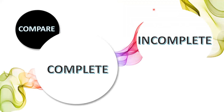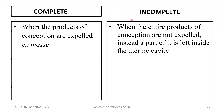Next, let's see complete and incomplete abortion. These are also opposite to each other. If after an abortion every part of the conceptus has been expelled, we call it a complete abortion. If a part of it is left inside the uterine cavity, we call it incomplete abortion. Complete abortion means the products of conception are expelled en masse — everything intact. Incomplete abortion means the entire products of conception are not expelled and a part remains inside the uterine cavity.